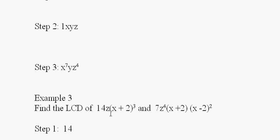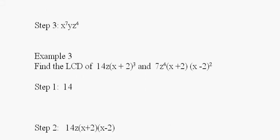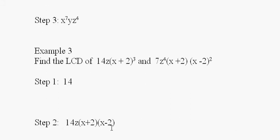I see there's a z, an x plus two, and an x minus two. Those are all the variables, so I put those in there as a product. And then I take everything to the highest power that it occurs.